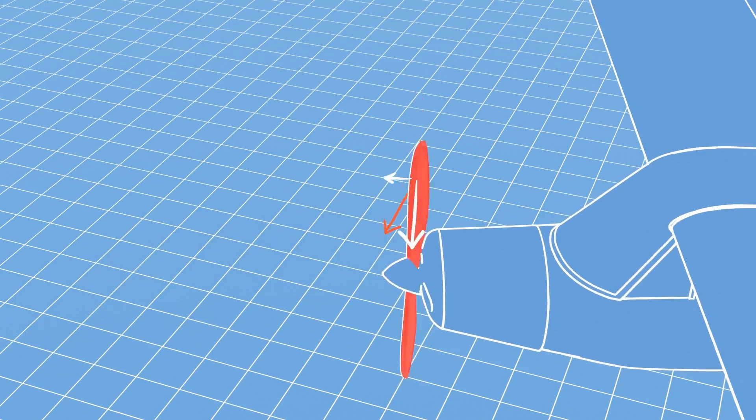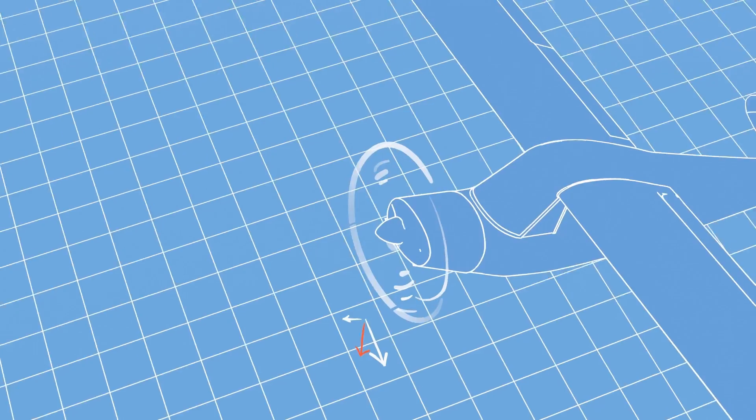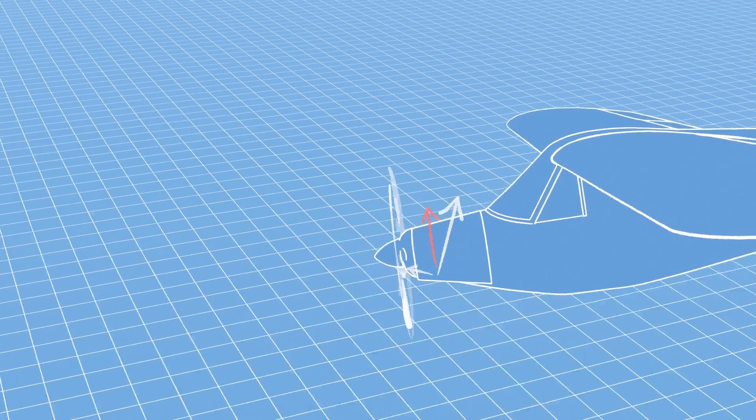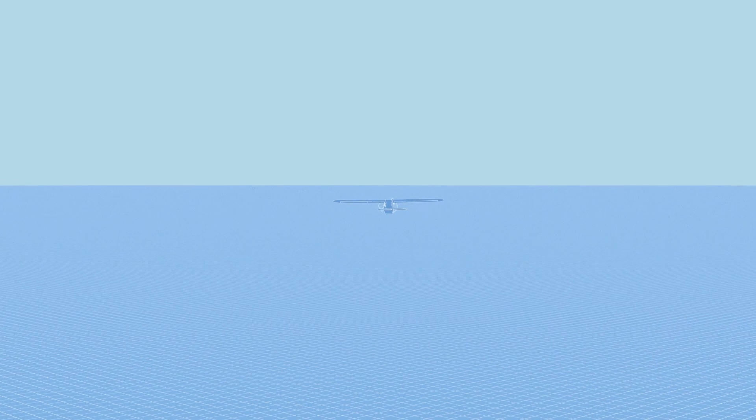And in the same way, when you go left, the airplane turns up. And when you turn up, it turns to the right. And when you turn right, the airplane turns down. This gyroscopic precession has little to do with the angle of the motor.